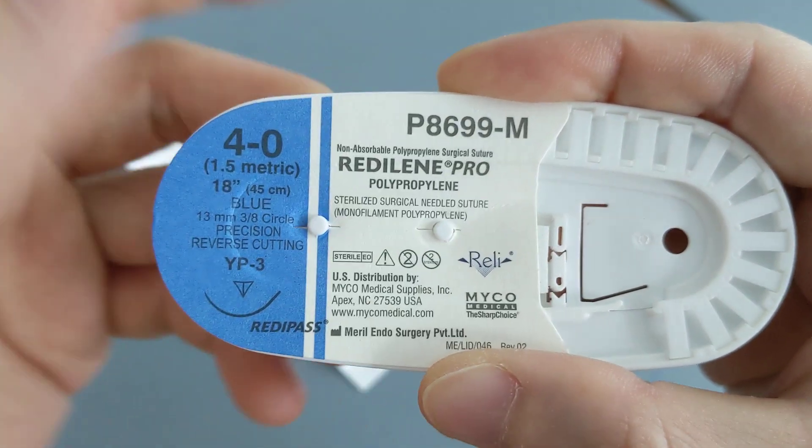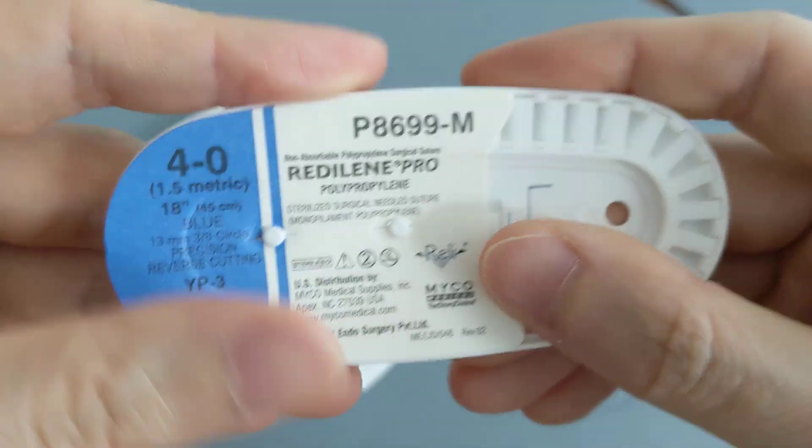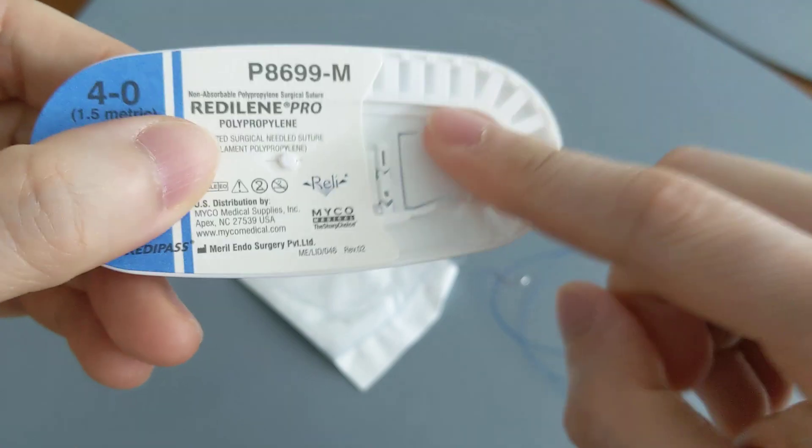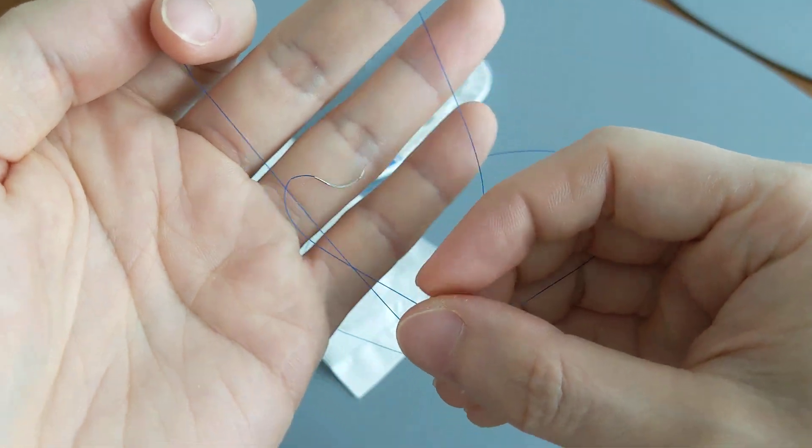Okay, so these sutures are not absorbable by the body. In other words, they will not dissolve, which means if you have blue stitches in right now, you will have to go back to see your doctor and have them manually and physically remove them.